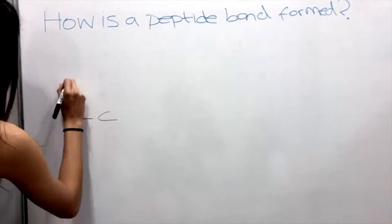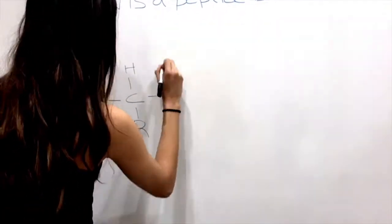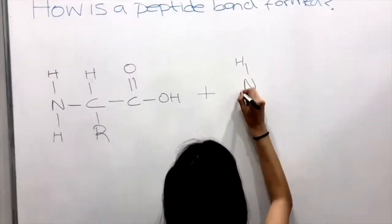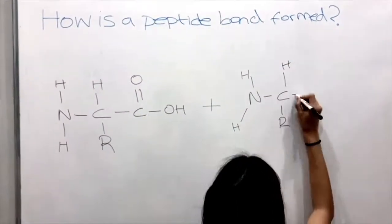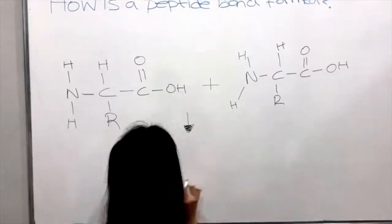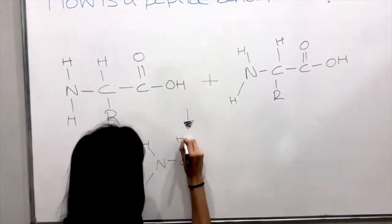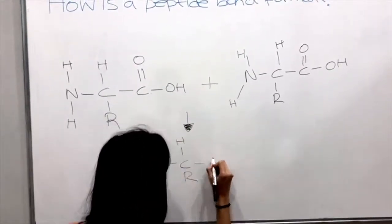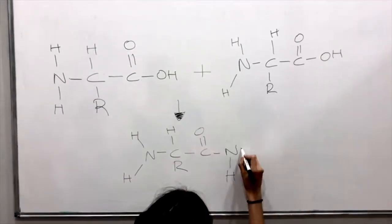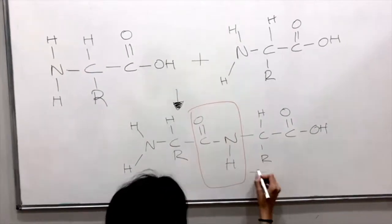A peptide bond is a chemical bond formed between two molecules when the carboxyl group of one molecule reacts with the amino group of the other molecule, releasing a molecule of water. This is a dehydration synthesis reaction, also known as a condensation reaction, which initially occurs between amino acids.